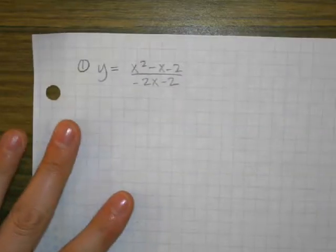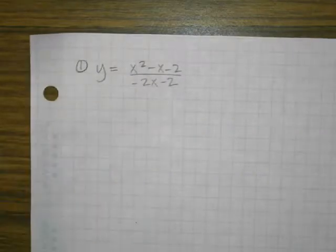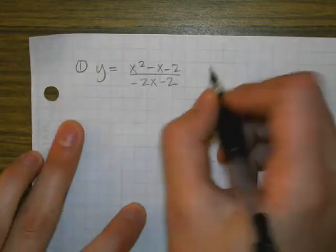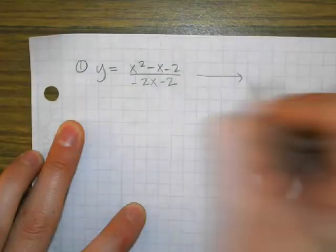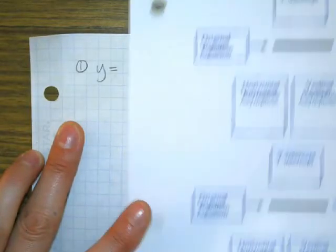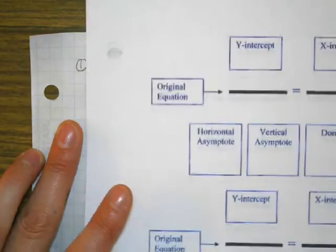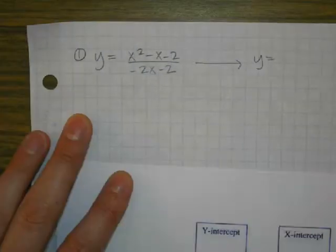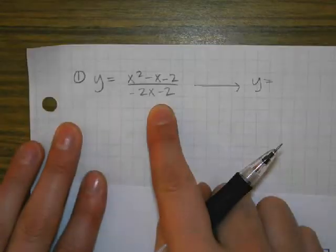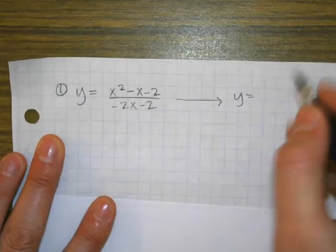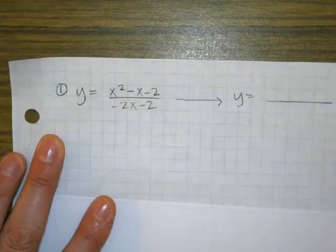Does it have to be on the graph paper? You're eventually going to graph it, so that's why I gave you graph paper, but you can do your work on notebook paper if you prefer. So even though we're not using this little sheet to kind of help us, we can still set up the problem like we did yesterday. So I went ahead and wrote down the original form of the graph, and I'm going to write my factored form over here.